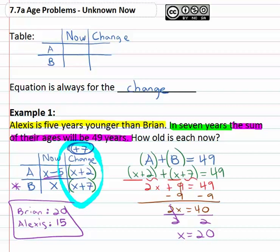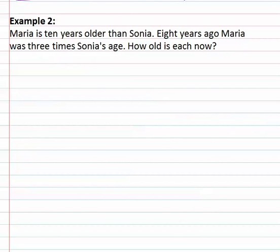Let's try another example. Setting up our little tic-tac-toe grid to organize what everybody's at right now and after the change that's described. We've got Maria is ten years older than Sonia. Eight years ago Maria was three times Sonia's age. How old is each now?